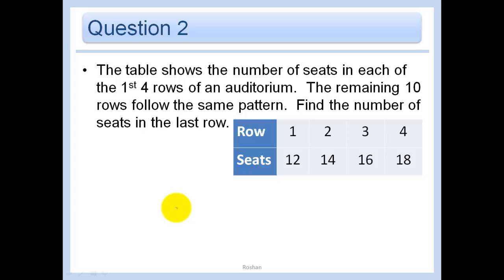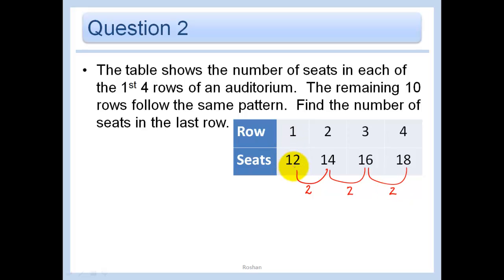The table shows the number of seats in each of the first four rows of an auditorium. The remaining 10 rows follow the same pattern. Find the number of seats in the last row. So what kind of pattern do you see? Well, the row number changes by one at a time, and the number of seats changes by two as each row increases. We start at 12 and go up 2 from there. I already have 18 seats and want to find out how many seats there'd be in row 10.